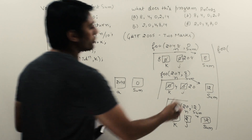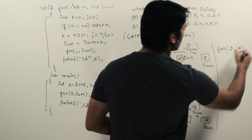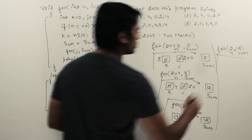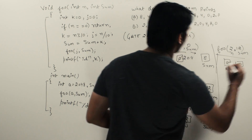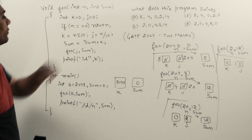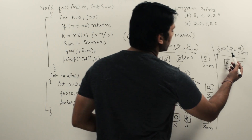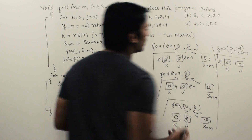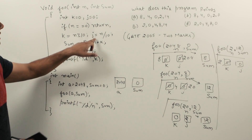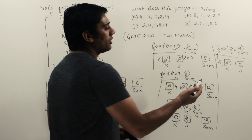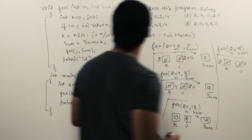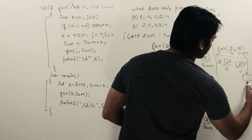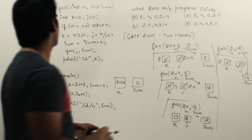Now n is 2 and sum is 12. There are local variables k and j both equal to 0. Since n is 2, not equal to 0, k is equal to 2 mod 10: since 2 divided by 10 has remainder 2, k is 2. j is equal to 2 divided by 10, which is 0.2, stored as integer so j is 0. Sum becomes sum plus k: 12 plus 2 equals 14. Then we call foo(0, 14).